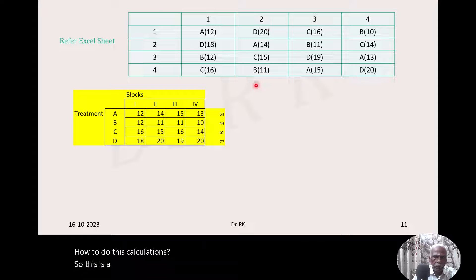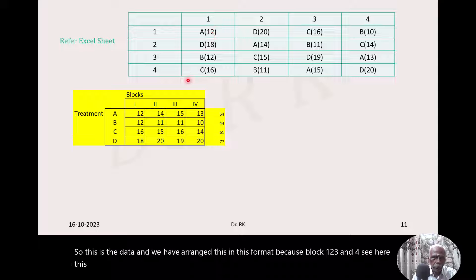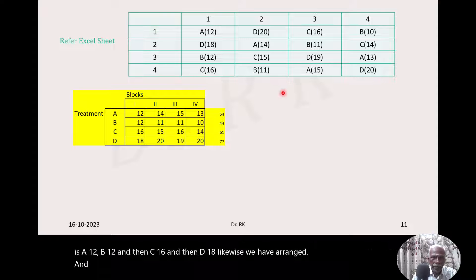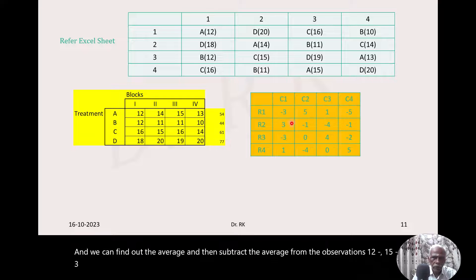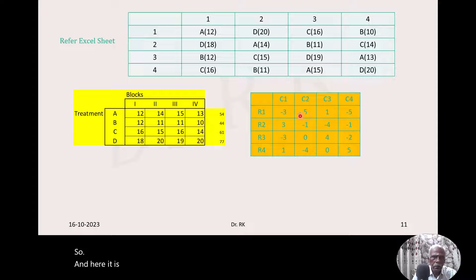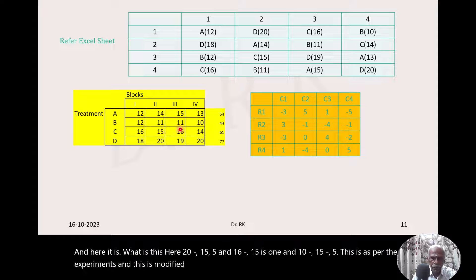The data is arranged in this format with block 1, 2, 3, and 4. For block 1: A yields 12, B yields 12, C yields 16, D yields 18. We can find out the average and then subtract the average from the observations. For example, 12 minus 15 equals minus 3. Here: 20 minus 15 equals 5, 16 minus 15 equals 1, and 10 minus 15 equals minus 5. This is the original arrangement and this is the modified arrangement.